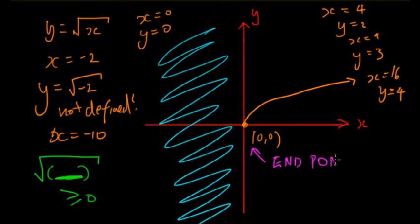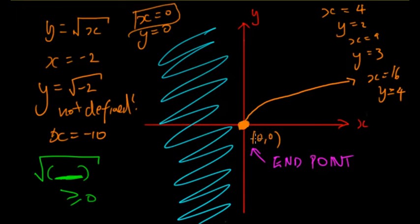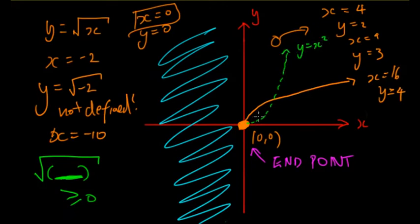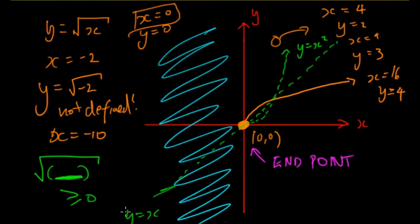The graph starts at zero zero, and this starting point is called the endpoint. When talking about domain and range, wherever the endpoint is, you need to draw it. Since the x value can equal zero, it needs to be a closed dot — not an open dot. The general shape may look similar to y equals x squared but going the other way, because they're actually inverses of each other.